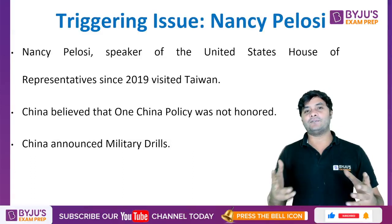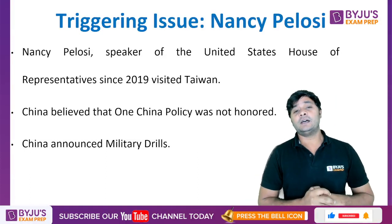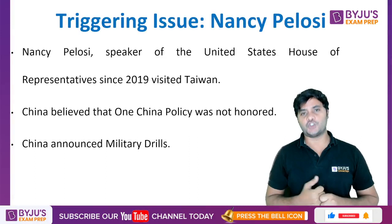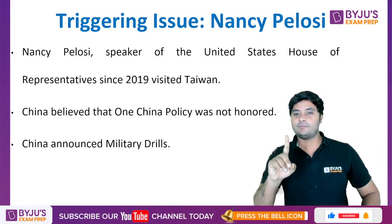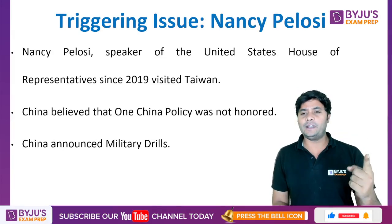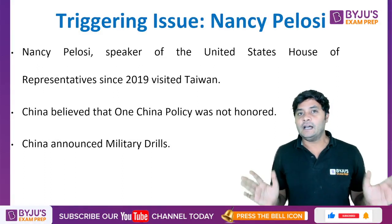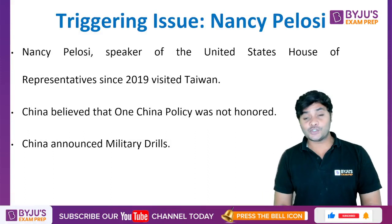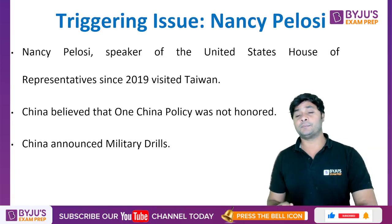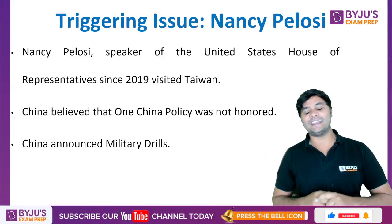The triggering issue that put China and Taiwan at loggerheads was Nancy Pelosi — the Speaker of the US House of Representatives — visiting Taiwan. China's position is that there is only one China and no political relations should be maintained with Taiwan independently, since all political decisions must go through mainland China. While the US acknowledges the One China Policy, it also maintains that it will support Taiwan militarily if China tries to take Taiwan by force.